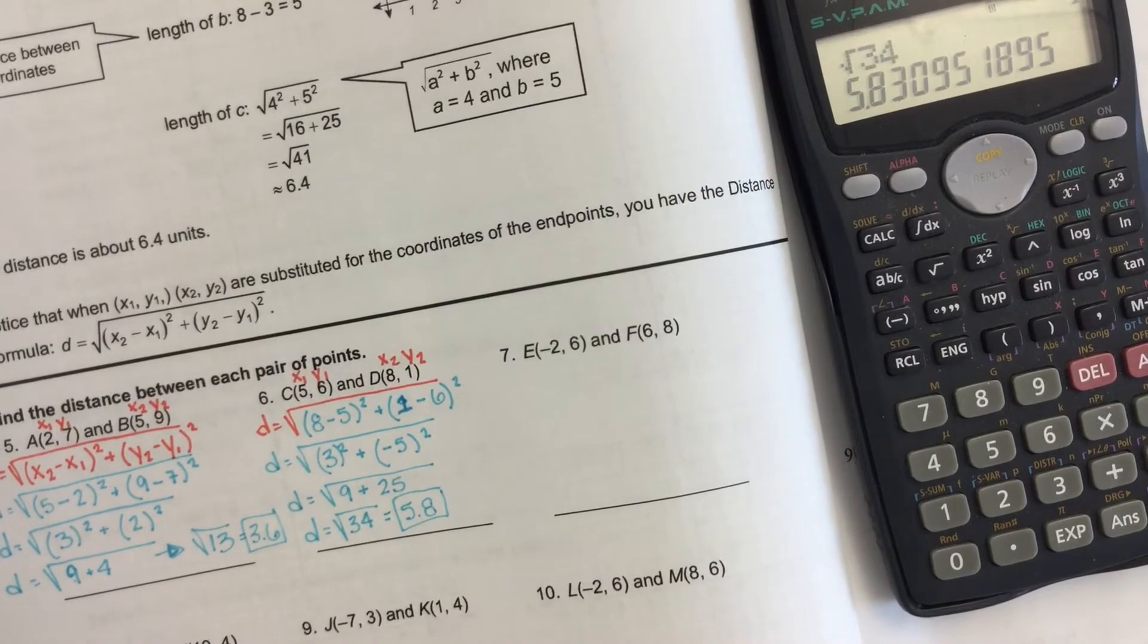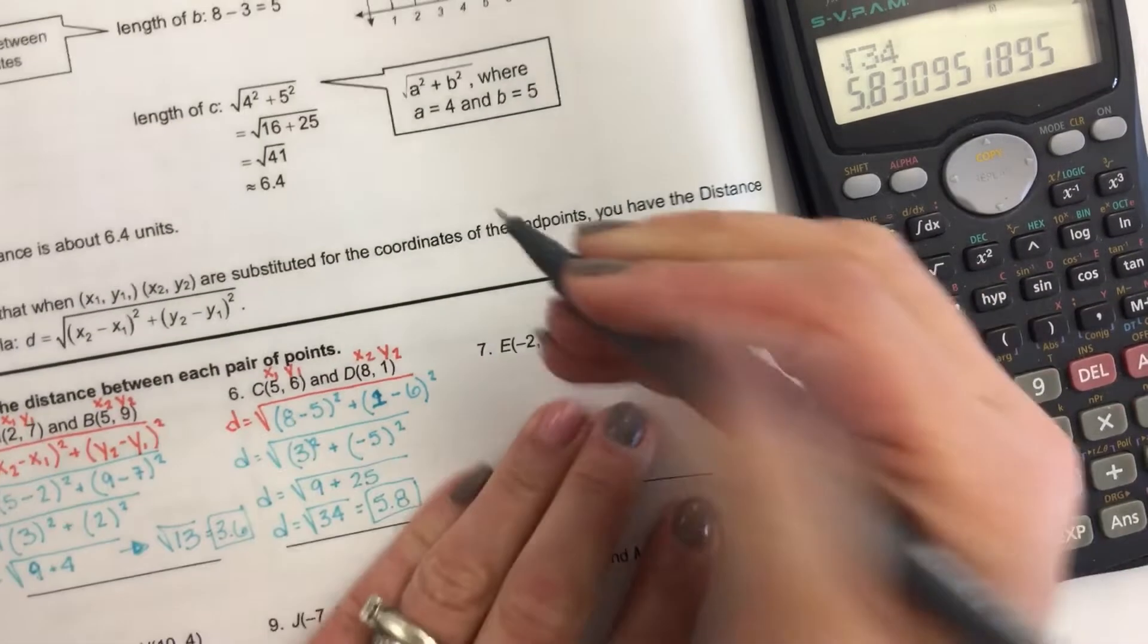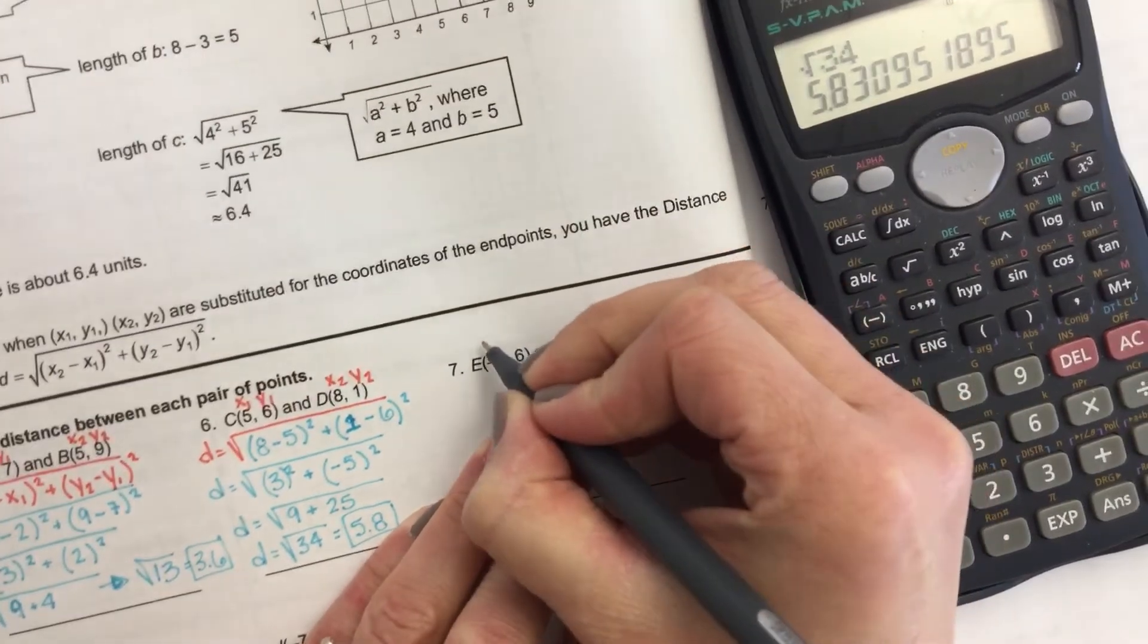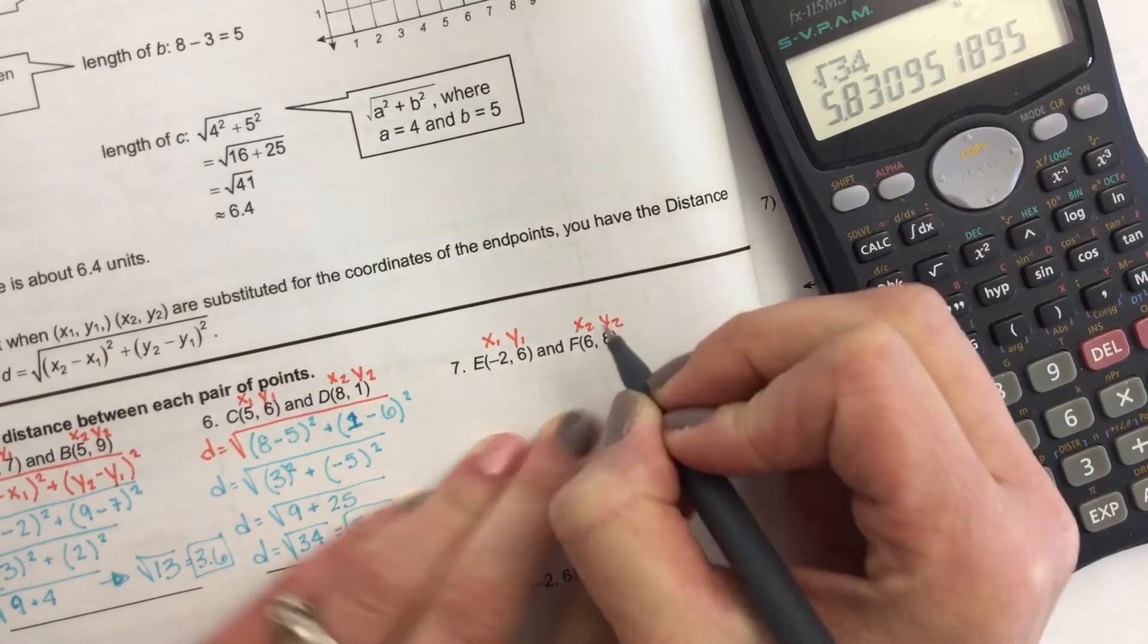Let's do one more here. Again, label your x and y's. So x1, y1, x2, y2.